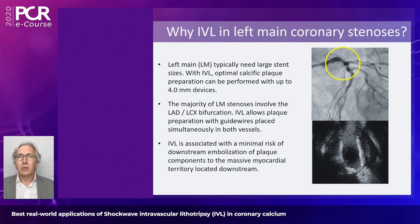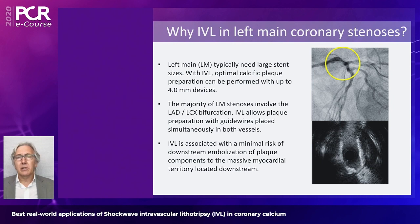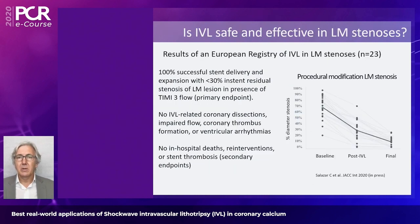If using atherectomy, we cannot keep two wires — only one. With IVL, we can treat the left main bifurcation while still protected by two guide wires. The third aspect is that the risk of downstream embolization to this huge territory distal to the left main is minimized because we are not generating atherectomy debris. Studies have demonstrated that the possibilities of no-reflow are minimal with this technique.